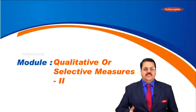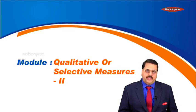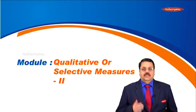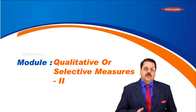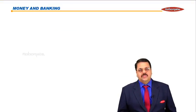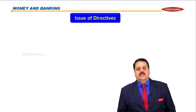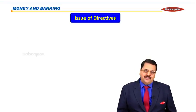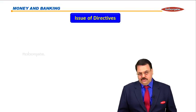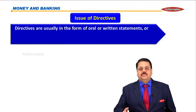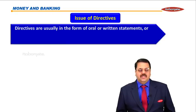Selective measures — the second point, that is the second module in the students. Issue of directives. Issue of directives goes something like this.